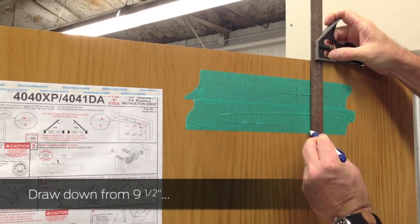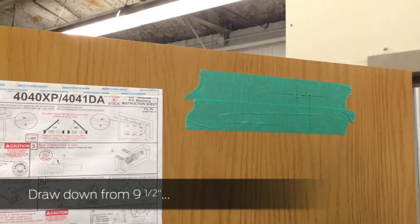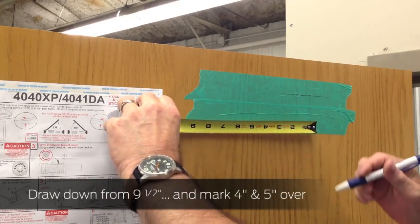Draw a perpendicular line down from the nine and a half inch mark. From that line, mark four inches and five inches away from the line.